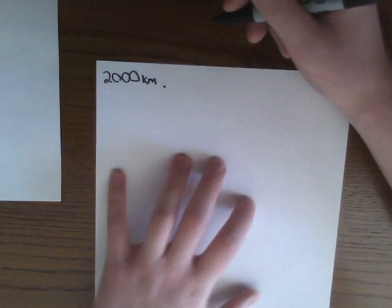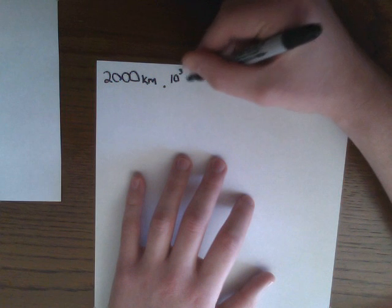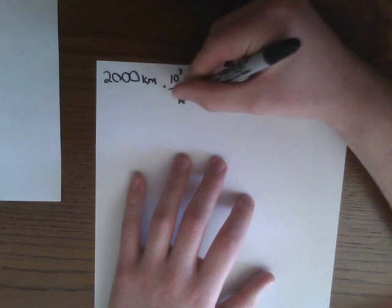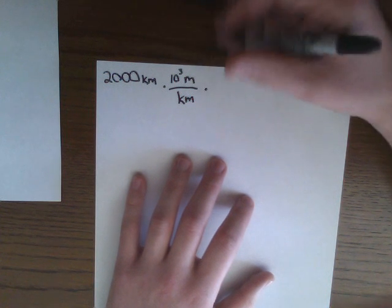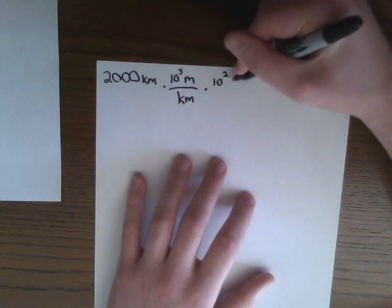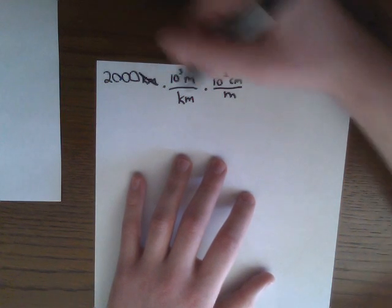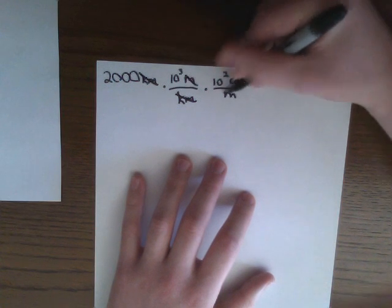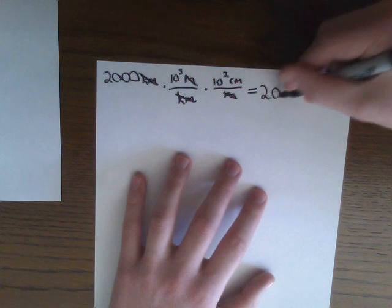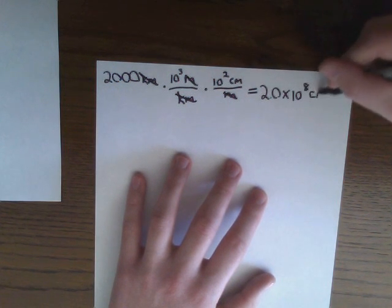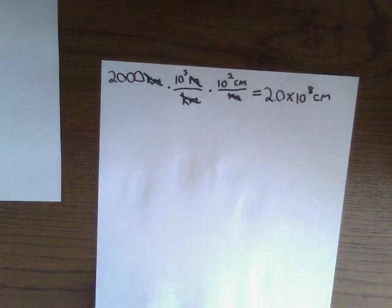We know from basic conversions that there are 1,000 meters in one kilometer, or we can write that as 10 to the third meters in one kilometer. We can then continue this by saying that there are 100 centimeters in one meter, or 10 to the second centimeters in one meter. We can allow the kilometers to cancel out, the meters will cancel out, and then we multiply the rest over to find that we have 2.0 times 10 to the eighth centimeters. That is our radius in centimeters.